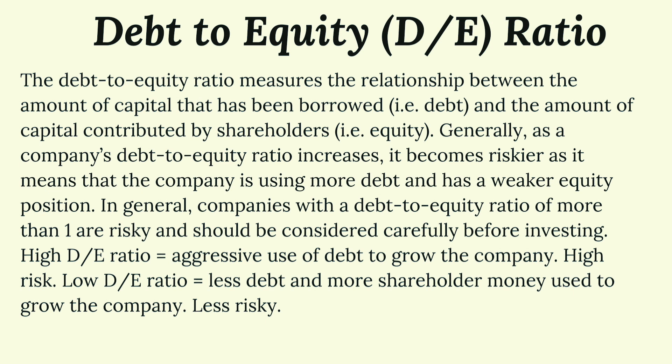In general, companies with a D-E ratio of more than one are high risk and should be considered very carefully before investing. High D-E ratio equals aggressive use of debt equals high risk. Low D-E ratio equals less use of debt equals less risky. I'll end it here for today with the ratios. These aren't all of them, but I consider these to be the most important to consider. That's it for today's episode.